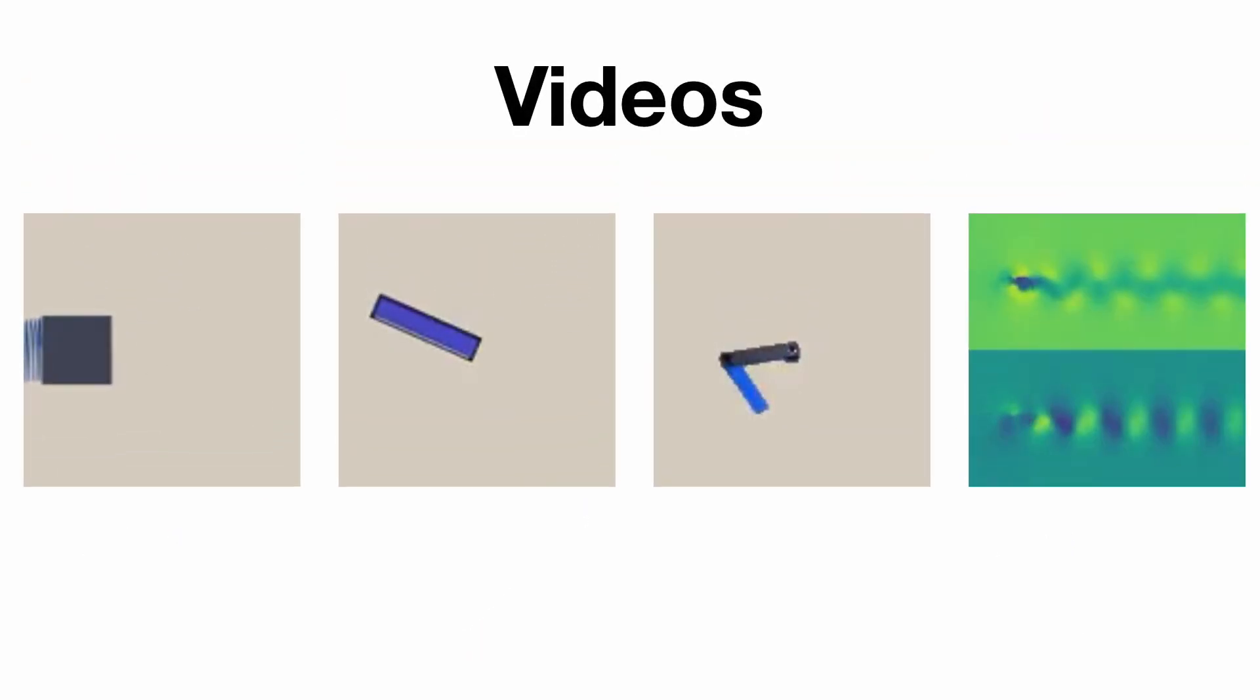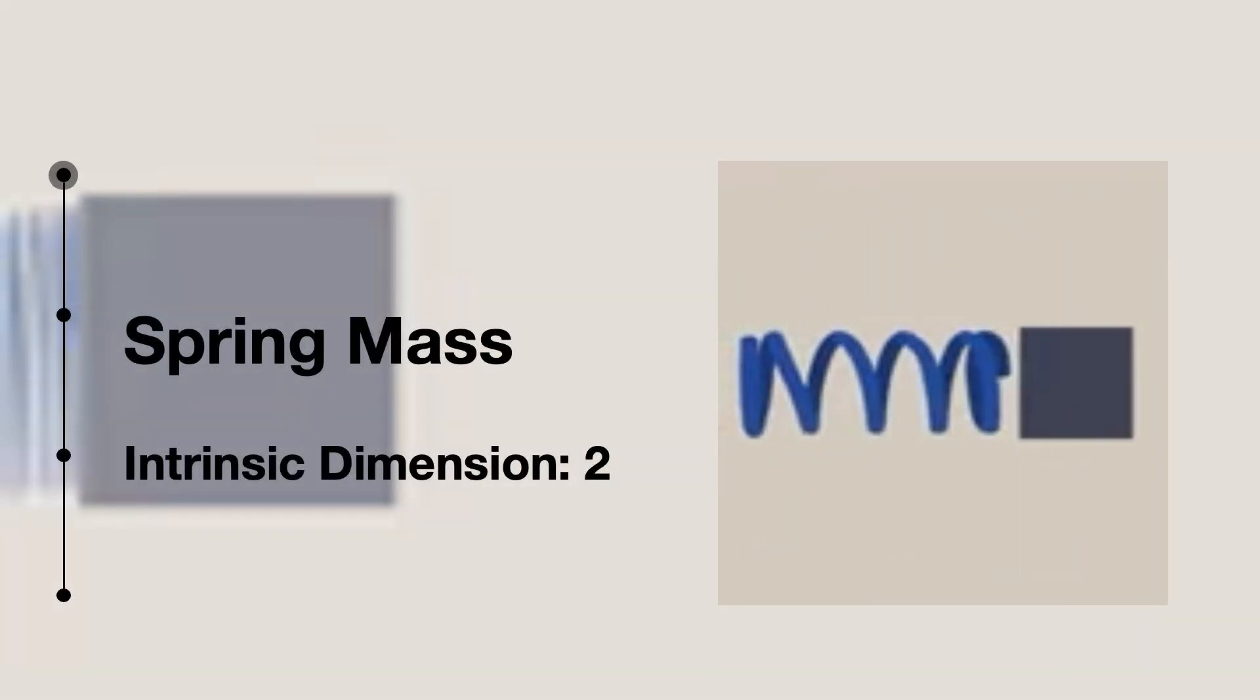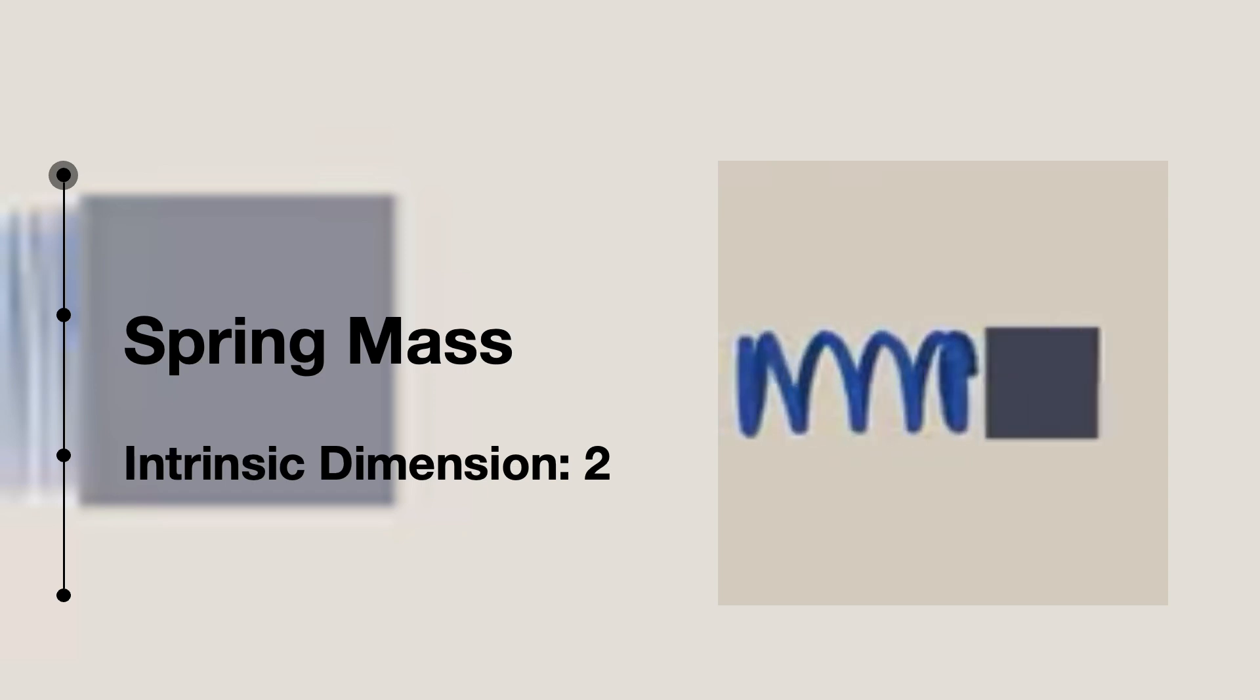Here are four representative data sets we used to demonstrate the potential of our method. The spring-mass system has an intrinsic dimension of 2 and is a linear oscillator with a fixed frequency. It features one stable equilibrium state.